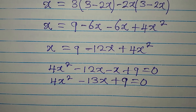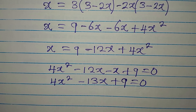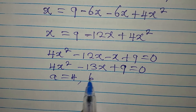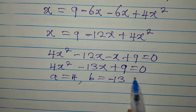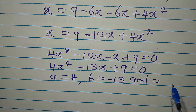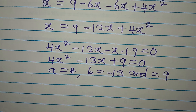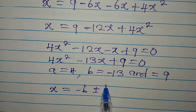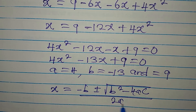We normally use the quadratic formula for this. So let's go back and use our formula. Our a is 4. Our b is minus 13. And our c is 9, the constant. Can you remember the formula? The formula is: x equals minus b plus or minus the square root of b squared minus 4ac, divided by 2a.